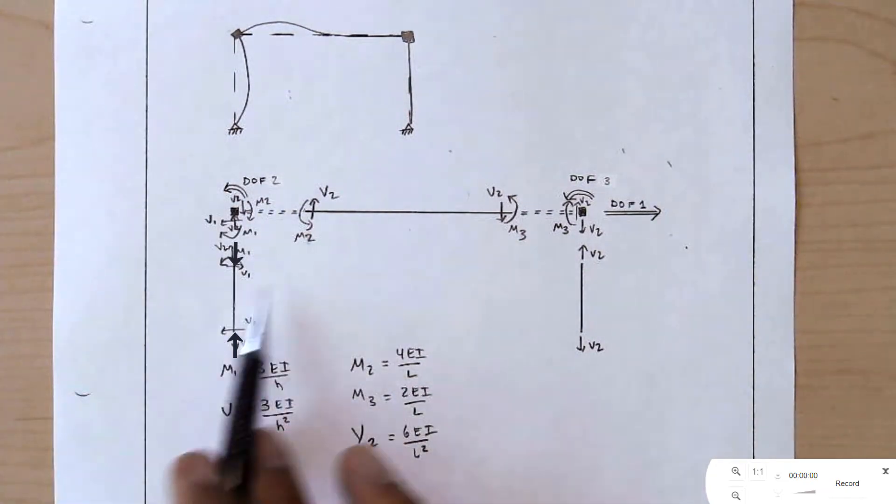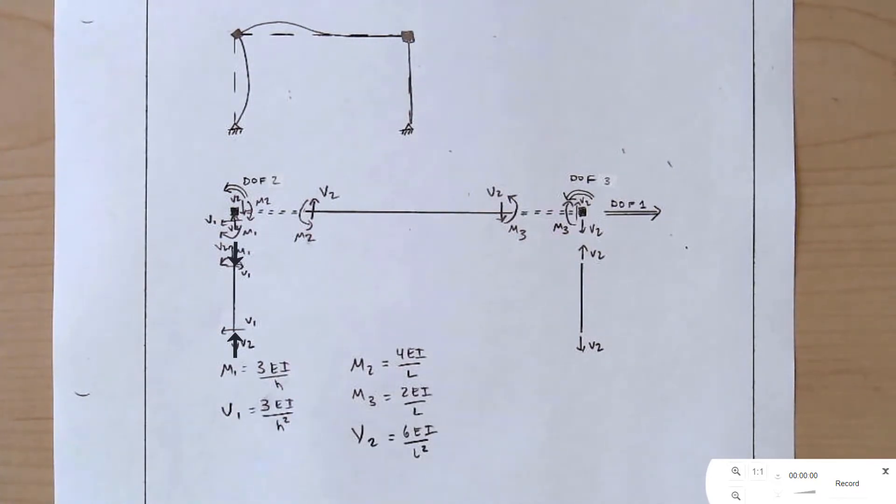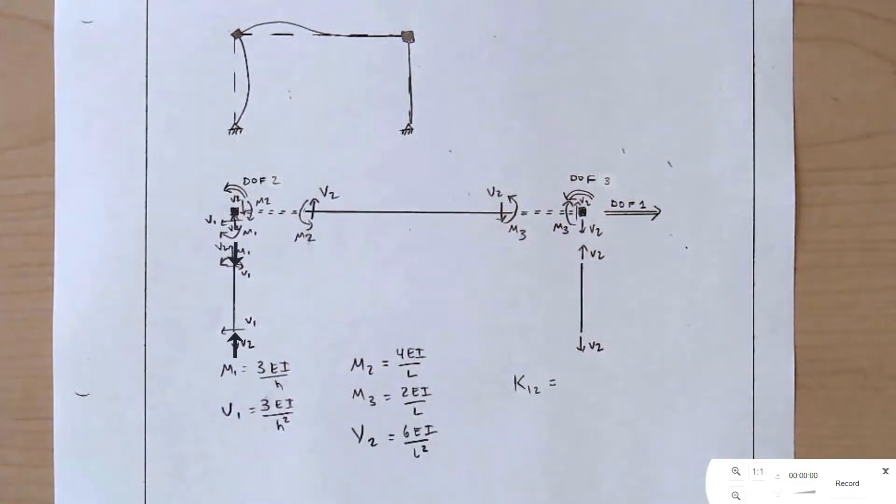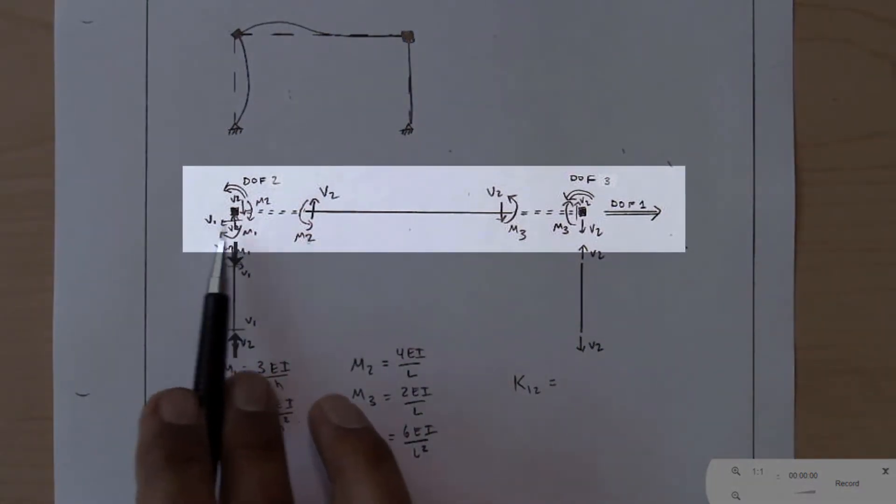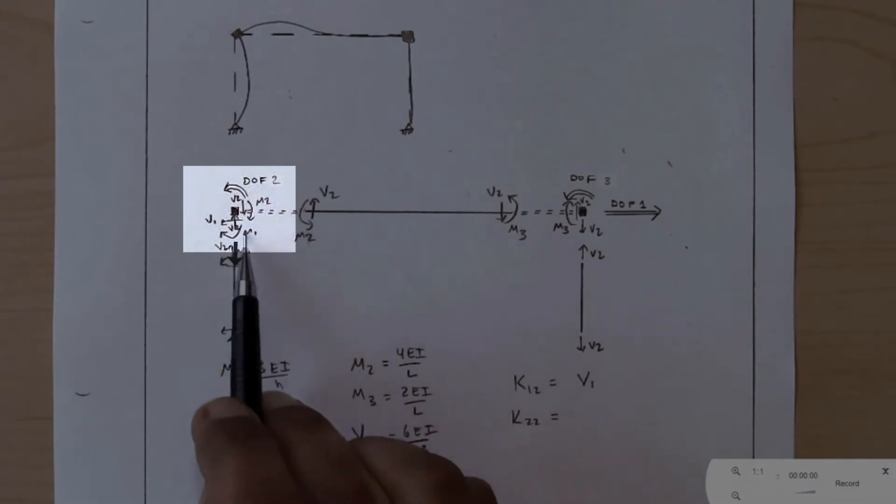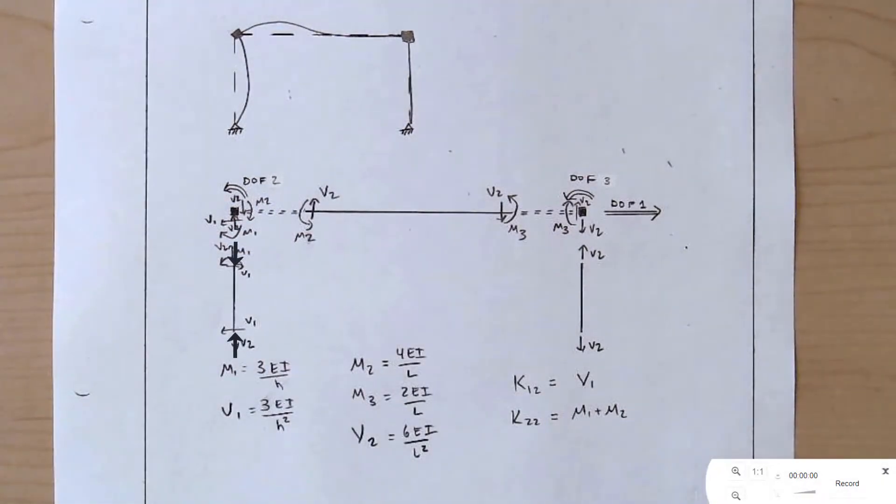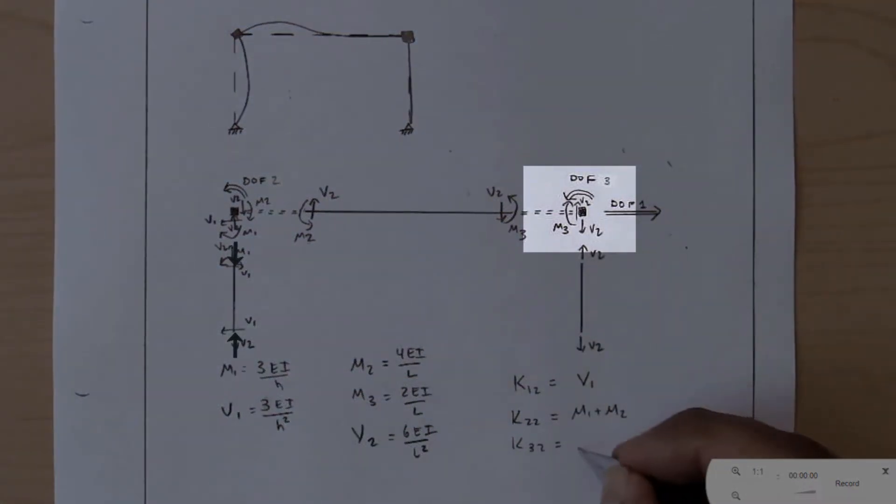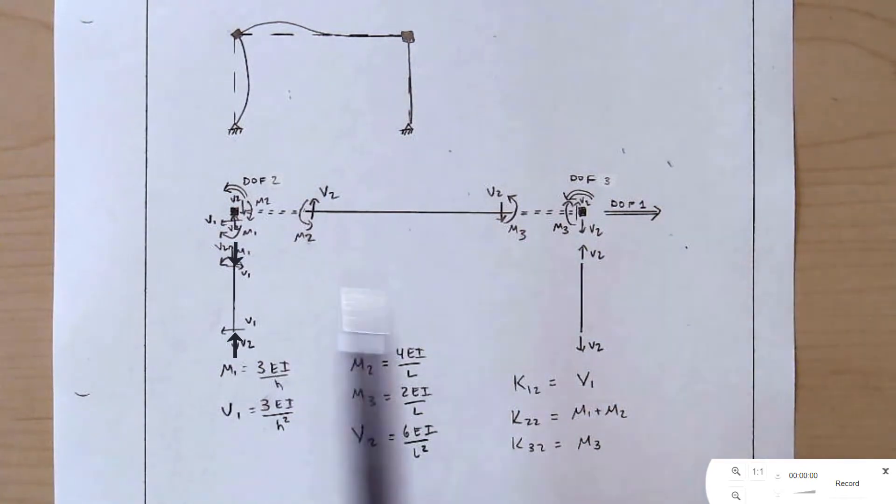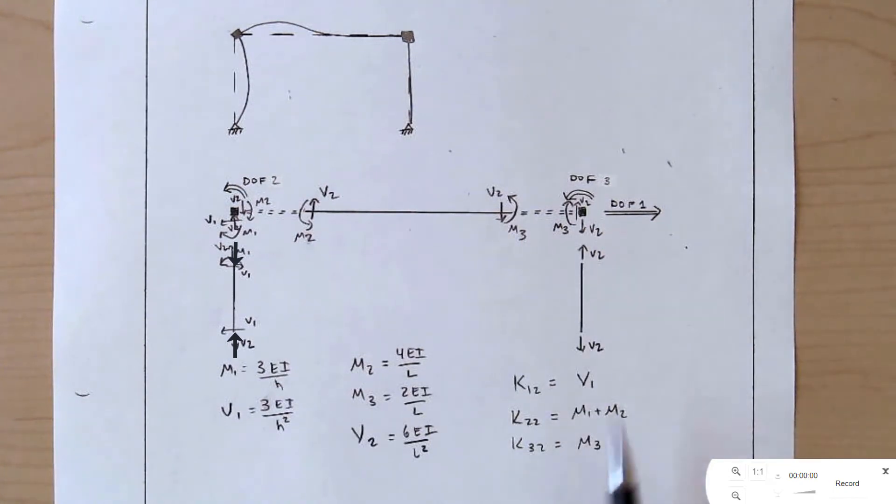I like to tell my students that no matter how much space you think you've left yourself, you never leave yourself enough space. And indeed, that's what I've done. This V2 right here looks pretty unclear, and I apologize for that. We're now ready to get our next three terms in this stiffness matrix. So K12 is the force along degree of freedom 1, due to this displacement that we're showing here. And the only horizontal force on degree of freedom 1 is V1. K22 is the moment at degree of freedom 2, that's M1 and M2. And K32 is the moment on degree of freedom 3, that's M3. You'll notice that in all of these cases, the forces are going opposite to the degree of freedom. So our signs are all positive here.